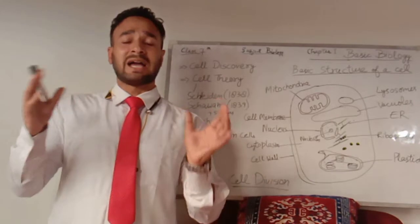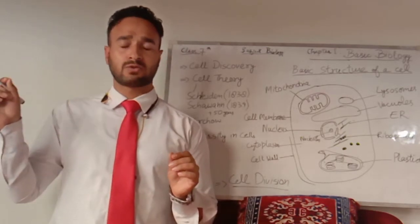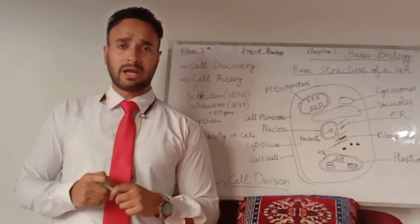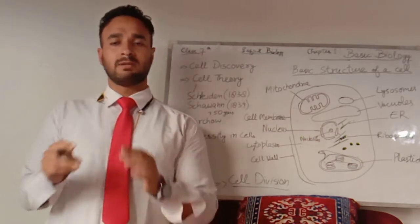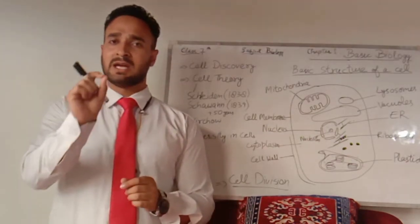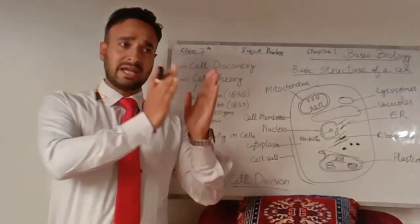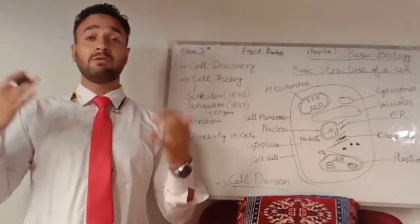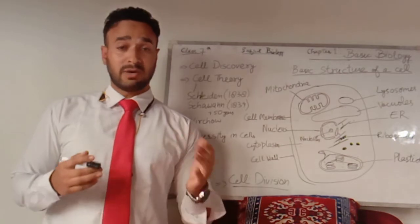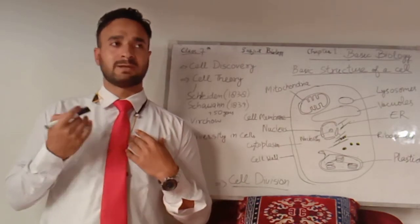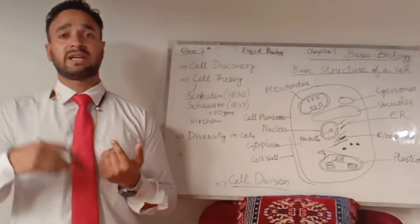Cells also vary in size. The average size of a cell is 3 microns to 5 microns. A micron is equal to one-thousandth of a millimeter — if you divide one millimeter into a thousand parts, that one-thousandth part is one micron. The smallest cell in human beings is the red blood cell, also called RBC or erythrocyte.